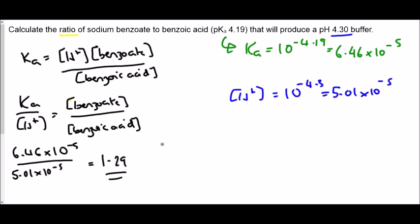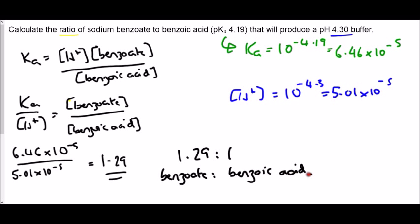What that really means is 1.29 to 1 of salt to acid. All that we're really looking for on the mark scheme is this number. You would also get marks for the conversion of pKa into Ka and pH into H⁺. Remember, if you get to a pH question and you can't think how to do it but you see a pH, convert it into H⁺ by using 10 to the minus. Similarly, if you see pKa, convert it into Ka because you're guaranteed to get marks for doing those things.